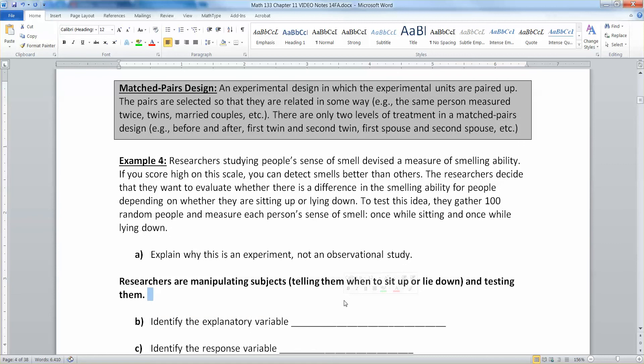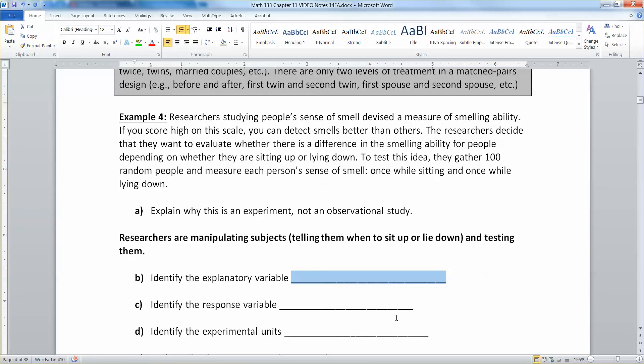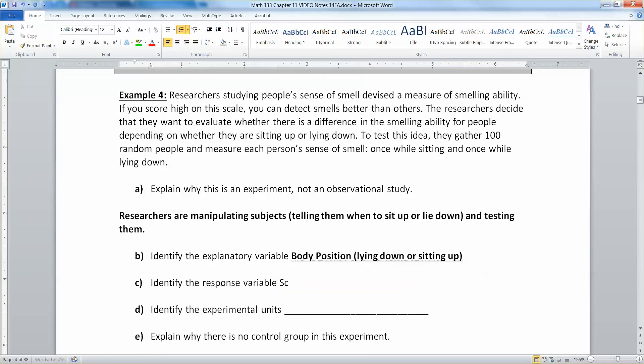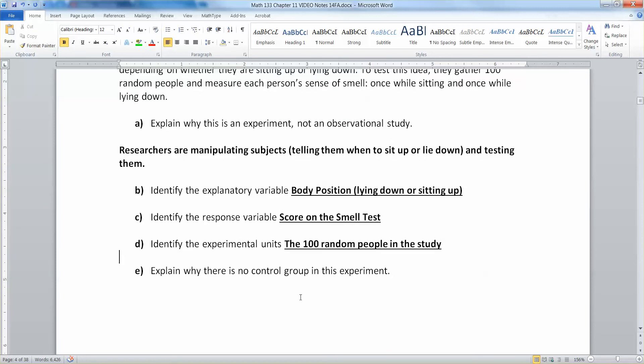So then identify the explanatory variable. Well, that would be your body position, lying down or sitting up. Identify the response variable. That would be your score on the smell test. Identify the experimental units. That's all 100 random people in the study.